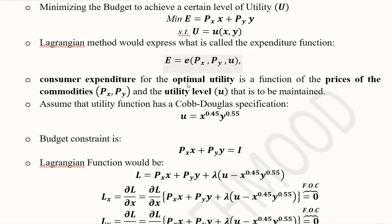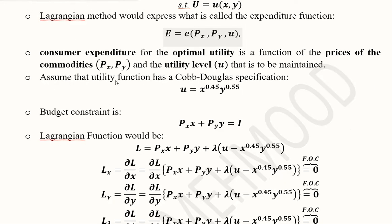We're trying to achieve that optimal level of utility, and once we do this, we get a minimized expenditure function in terms of the prices of the commodities and the utility level, as you can see here in its expected form.